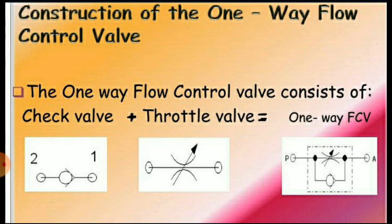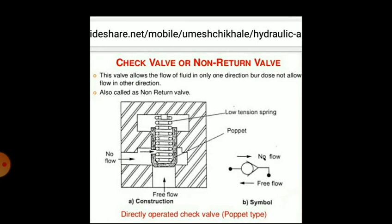Now we will see the construction of the one-way flow control valve. The one-way flow control valve consists of a check valve plus a throttle valve. The purpose of a check valve is to block the flow of fluid in a given direction but to permit unrestricted flow in the opposite direction. For this reason, they are also known as non-return valves. The flow blocking must be absolutely leak-free, and hence these valves are always of poppet-type construction.